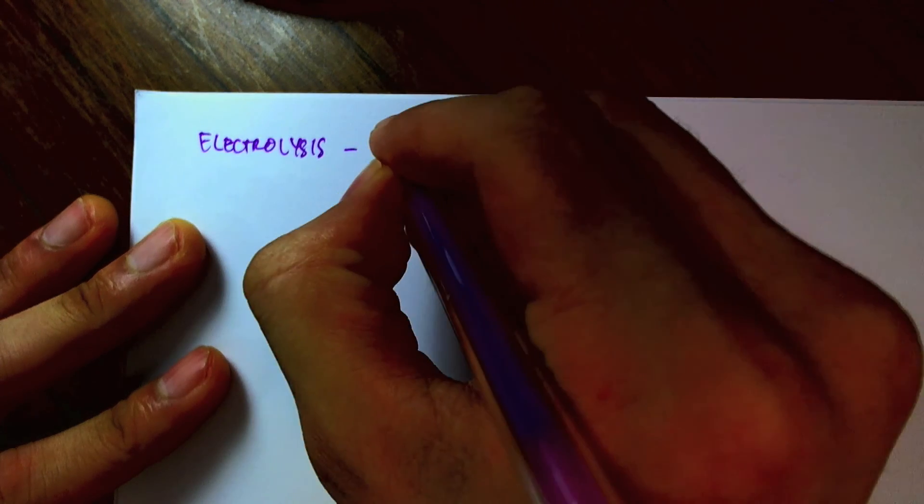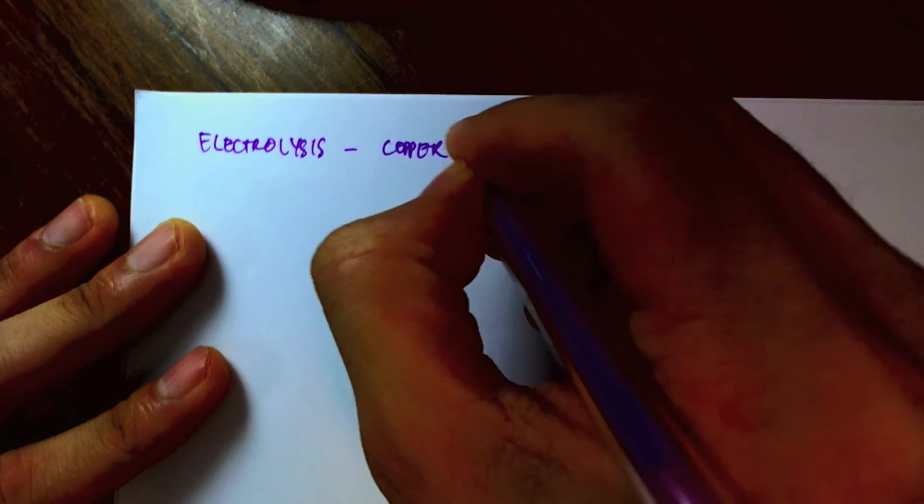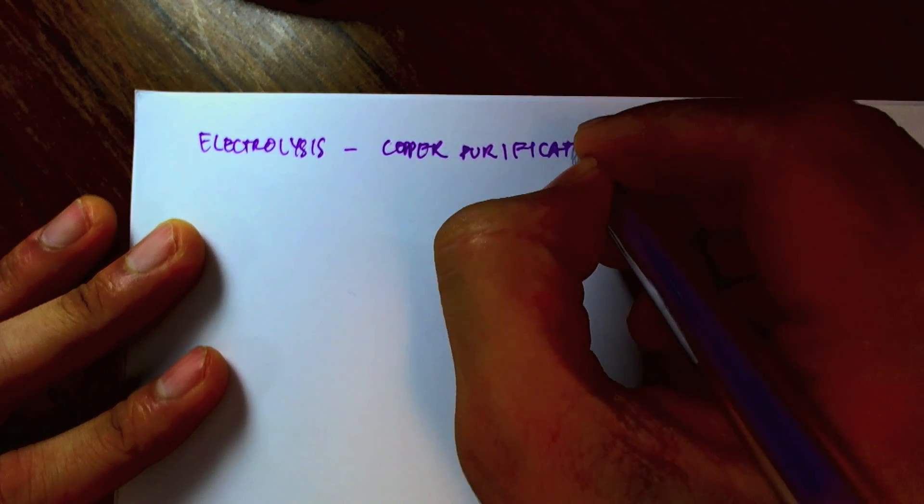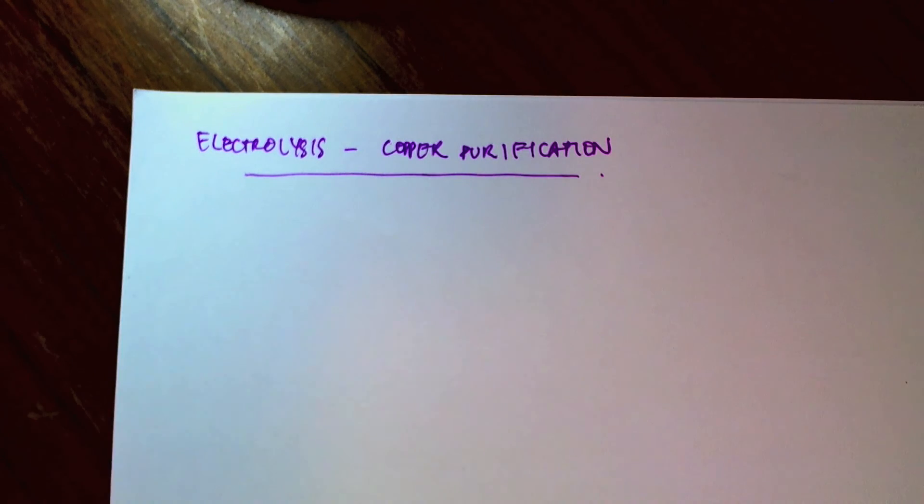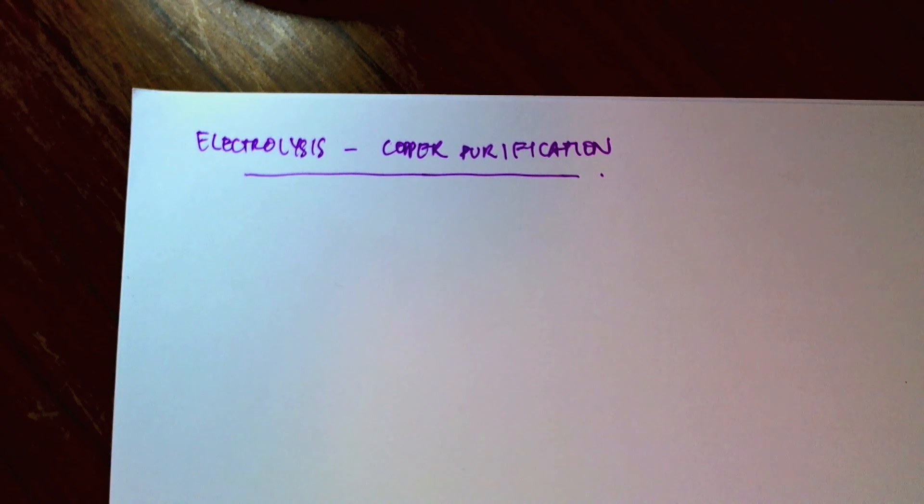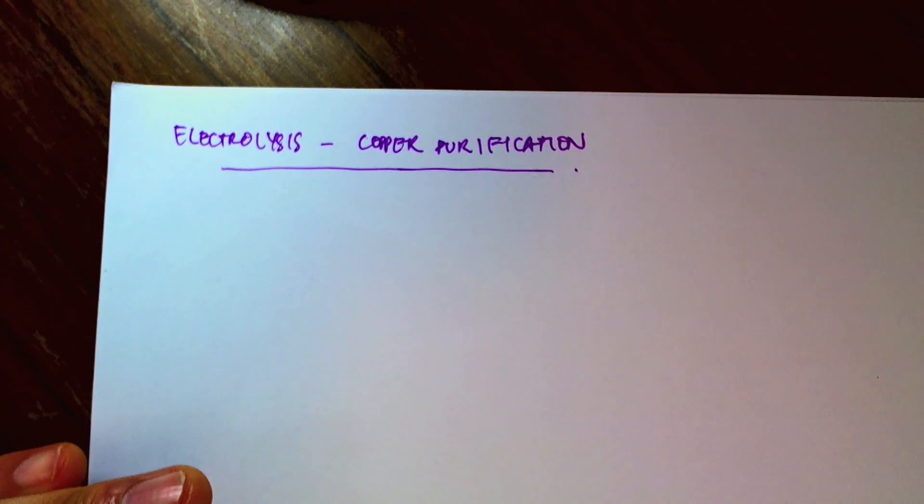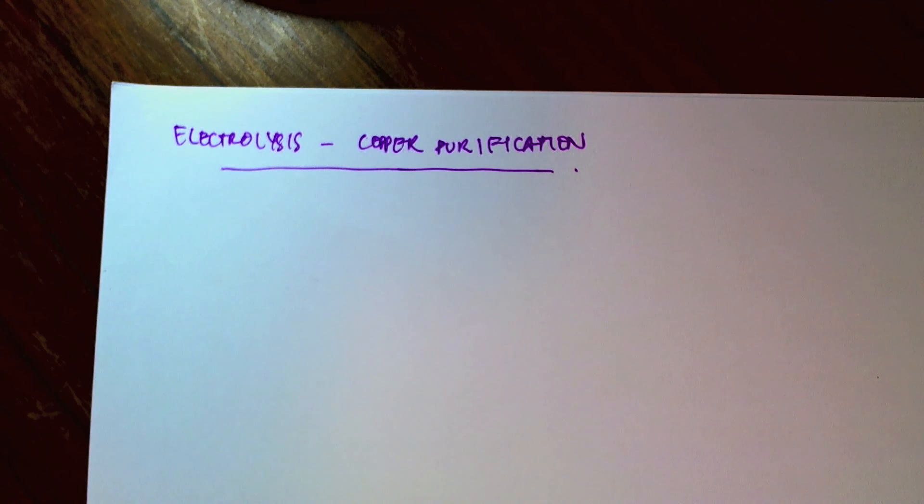I will start now by looking at the process of the purification of copper. So copper is an extremely important metal because of its high electrical conductivity, so it's used in everything from electrical appliances to computers to electronic products. So anything that involves electricity around you, you're more likely than not to find copper in it.